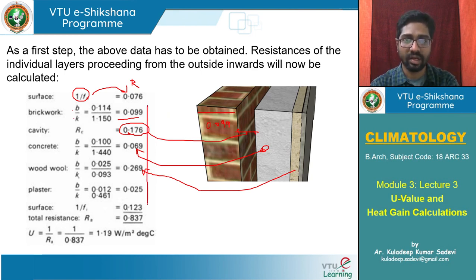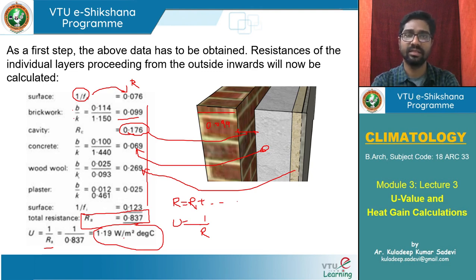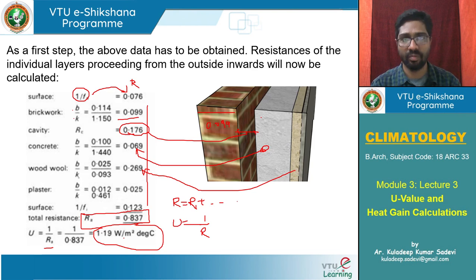Once we have all the R-values, we add them all together to get the total R. As we know, resistance is directly additive: R = R1 + R2 + R3 and so on. Then U = 1/R = 1/0.837 = 1.19 W/m²·°C. Comparing this to a normal 9-inch brick wall at 2.5 W/m²·°C: by adding 4-inch brick wall plus air gap plus concrete plus insulation plus plastering, we achieve 1.19 W/m²·°C.